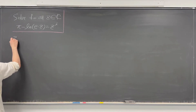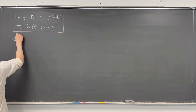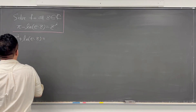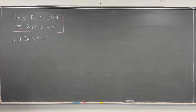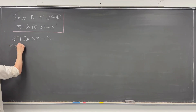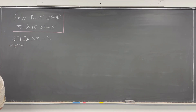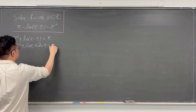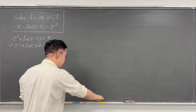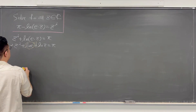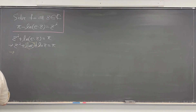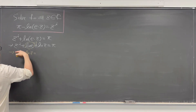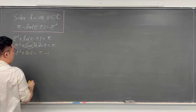So first, our equation can be rewritten as z to the power of i plus ln of e times z equals pi. Working out the left side, we get z to the power of i plus ln of e plus ln z equals pi. Since ln of e equals 1, we can rewrite this as z to the power of i plus ln z equals pi minus 1.